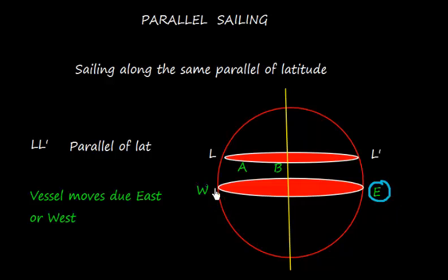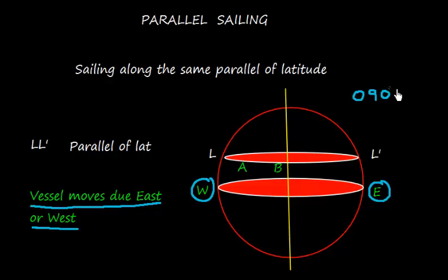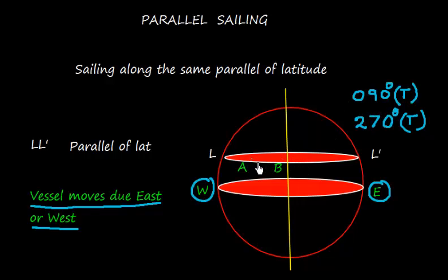Looking here, this is east and this is west, so the vessel moves due east or west. This simply means either the course is going to be 090 degrees true, or it is going to be 270 degrees true. If it is 090 degrees true, the vessel is going to move from A to B towards east. And if it is 270 degrees true, the vessel is going to move from B to A towards west.